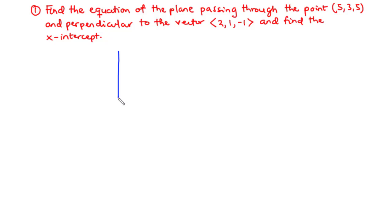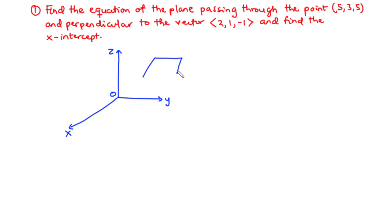We start by drawing the three-dimensional plane. We have this to be the x-axis, the y-axis, and the z-axis, and this to be the origin. Let's assume that we have a plane around this region, and then we have a point, say P0, on the plane. We also have a vector, say n, which is orthogonal or perpendicular to the plane.